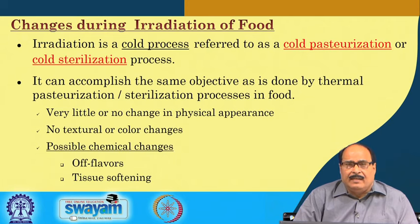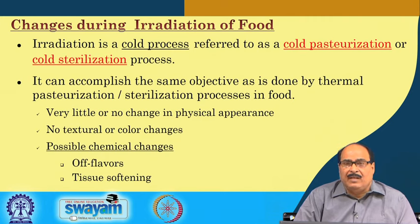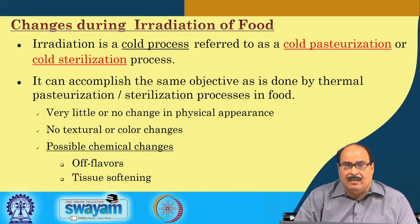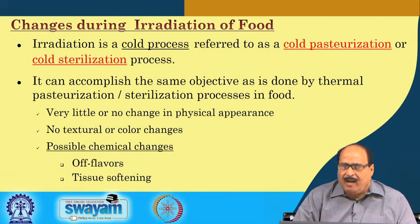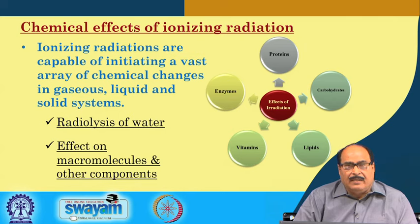Irradiation has very little or no change in the physical appearance of food. There are no or very minimal textural or color changes. However, there may be some chemical changes, and if not properly managed, these may result in off flavor or softening of fruits and vegetables. So it becomes important to examine the chemical effects of ionizing radiations.